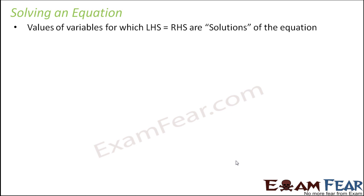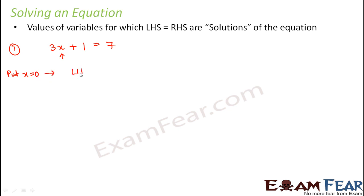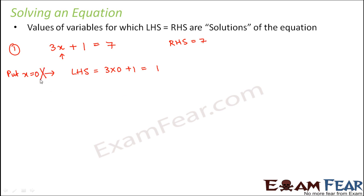Let us take an example: 3x plus 1 is equal to 7. To solve this equation, we need to find the value of x for which the left hand side equals the right hand side. Let us try x equal to 0. The left hand side would be 3 into 0 plus 1, which equals 1. The right hand side is 7. Since 1 and 7 are not equal, x equal to 0 is not the solution.